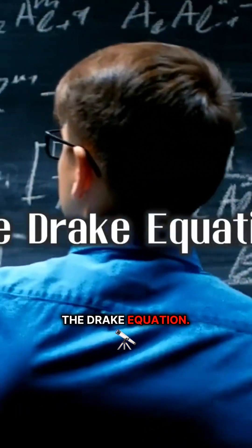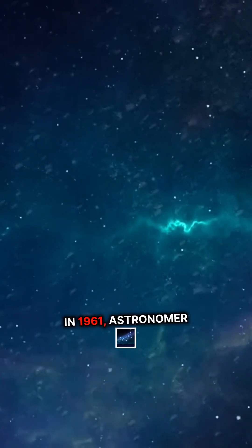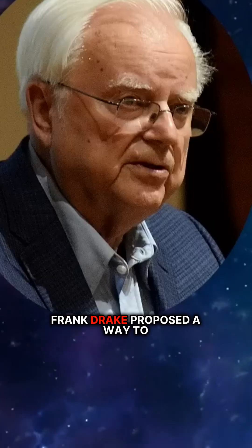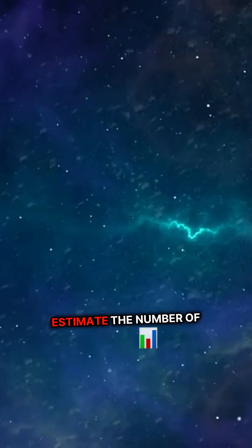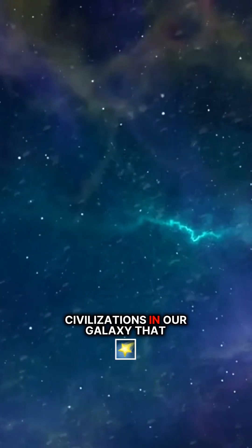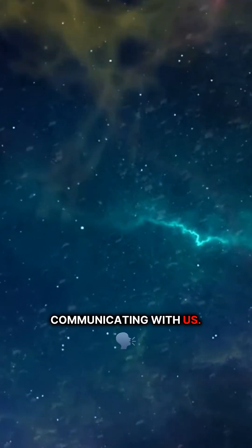The Drake Equation. In 1961, astronomer Frank Drake proposed a way to estimate the number of civilizations in our galaxy that might be capable of communicating with us.